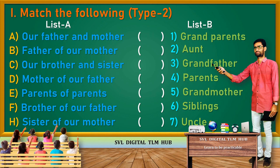First one: Our Father and Mother — answer is Parents, so we write four in the given brackets. Father of Our Mother — Grandfather. Our Brother and Sister — Siblings, so we write six in the given brackets. Mother of Our Father — Grandmother. Parents of Parents — Grandparents. Brother of Our Father — Uncle. Sister of Our Mother — Aunt.